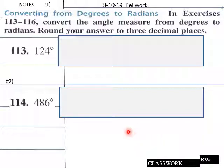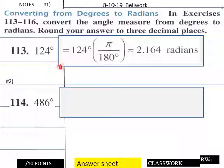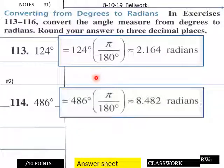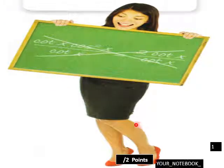Okay, welcome back for the solutions of today's bellwork. 124 degrees, when you convert that into radians, here is your conversion factor — pi over 180 — and that comes out to 2.164 radians. And then 486 times pi over 180 comes out to 8.482 radians. So check yourself on that.